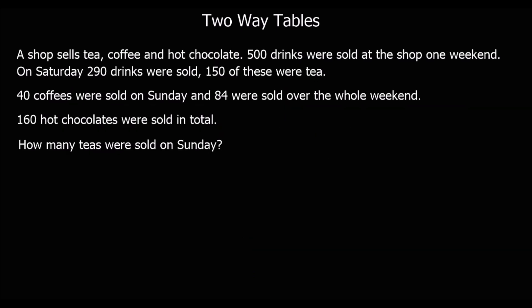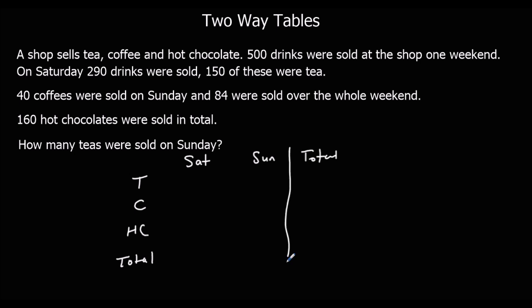Sometimes they give you a two-way table question without giving you the two-way table, so in this case we've got to draw our own table and then fill in the gaps. We've got a shop selling tea, coffee, and hot chocolate, so we'll have those as columns plus a total. Then across the weekend we've got Saturday, Sunday, and total as rows. Let's make ourselves a two-way table.